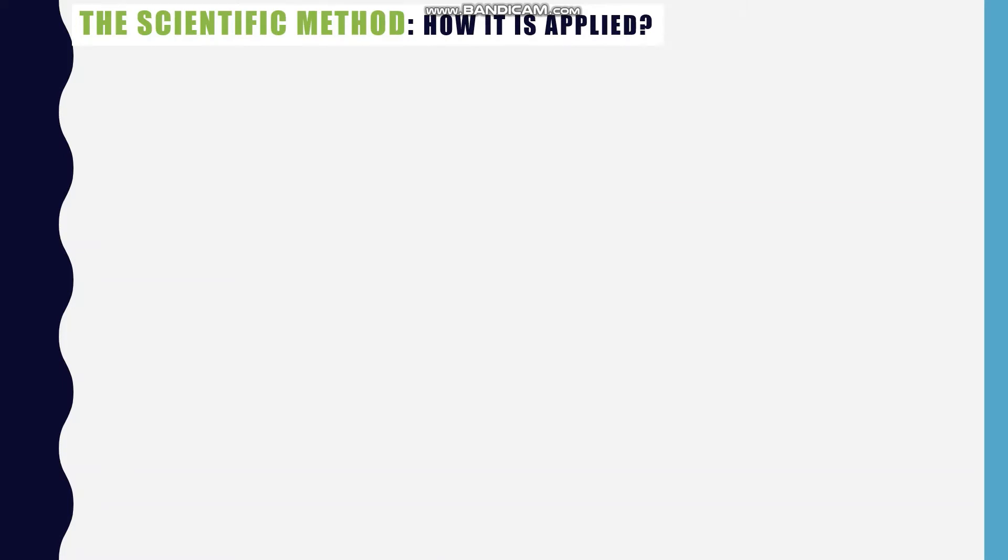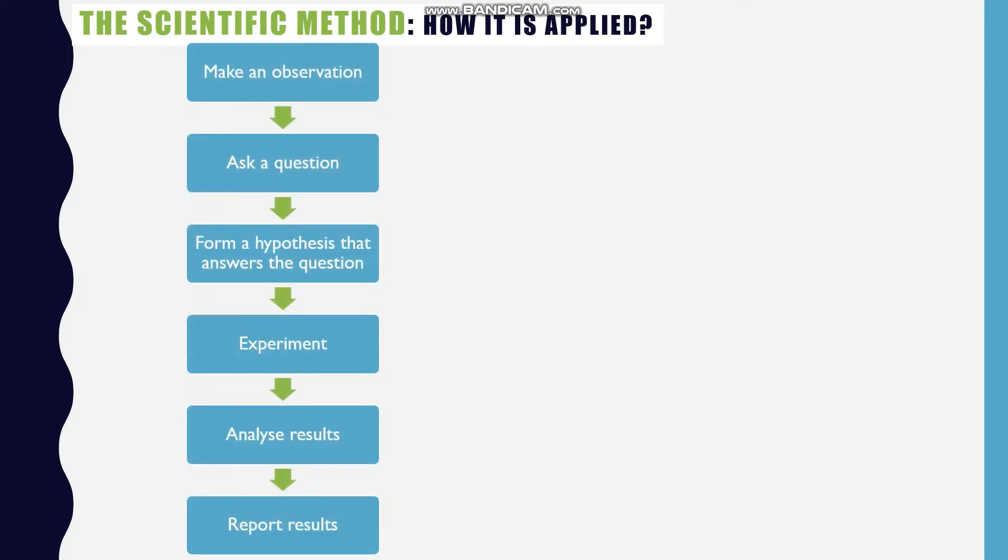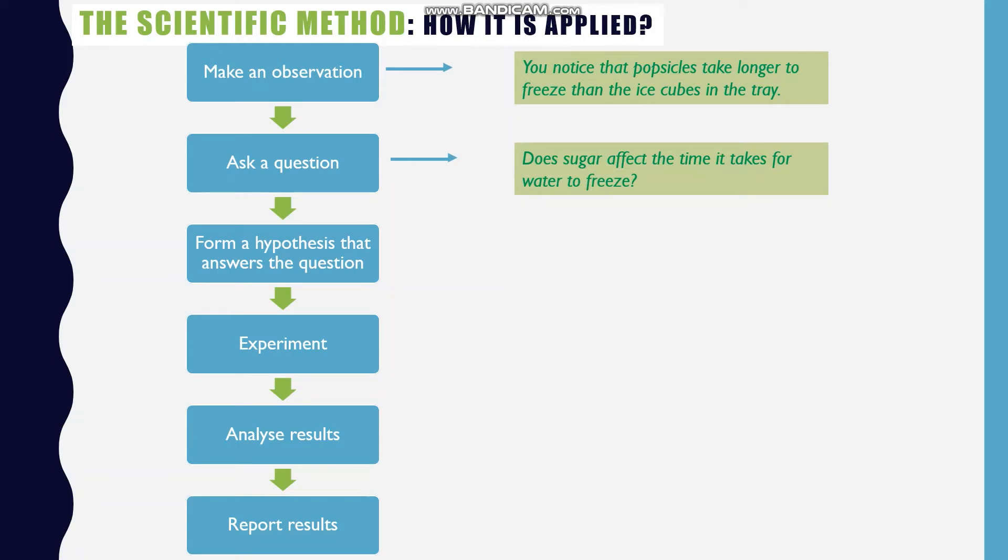Now let's look at a simple way in which the scientific method is applied. So we have our flowchart which shows the steps of the scientific method. So make an observation. Our observation could be that you notice that popsicles take longer to freeze than the ice cubes in the tray. Next, you ask a question. Does sugar affect the time it takes for water to freeze?